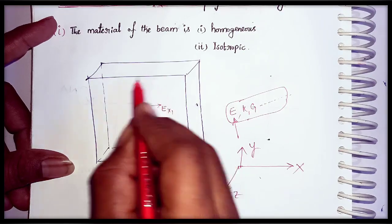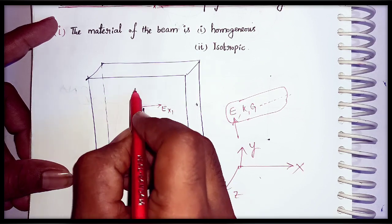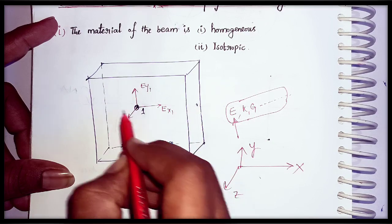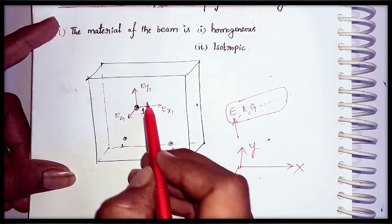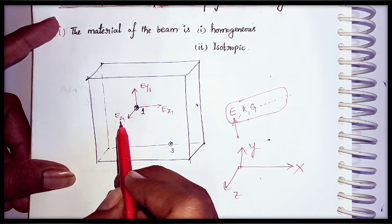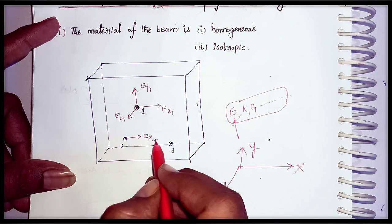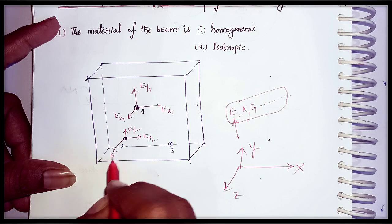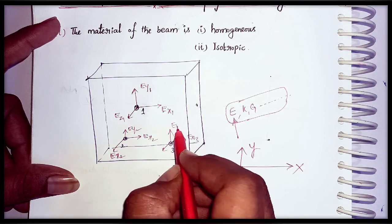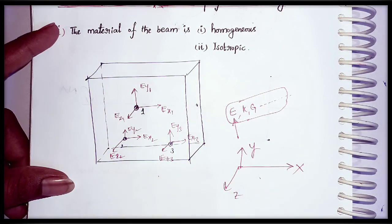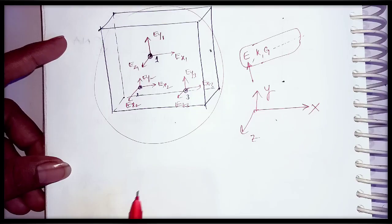At point 1, the Young's modulus in the x-direction is Ex1, in the y-direction is Ey1, and in the z-direction is Ez1. Similarly at the second point it is Ex2, Ey2, and Ez2, and at the third point it is Ex3, Ey3, and Ez3. Now let us understand the concepts of homogeneous and isotropic material.